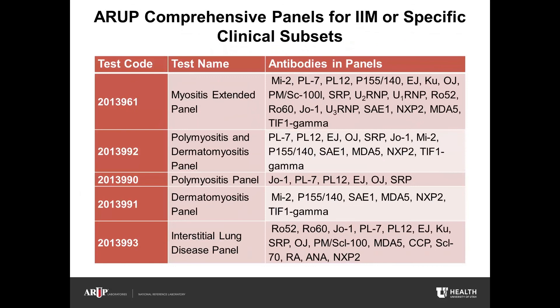Recognizing the need for physicians to adequately identify and stratify patients with myositis for treatment and long-term management, ARUP Laboratories offers several panels for evaluation. The myositis extended panel is comprised of myositis-associated and myositis-specific antibodies for a comprehensive evaluation. This panel is particularly useful in patients who may present with poorly defined clinical manifestations. For more targeted myositis subtype evaluation, three main panels are offered, including panels for polymyositis, dermatomyositis, as well as a combined one for polymyositis and dermatomyositis. Lastly, recognizing the frequency of interstitial lung disease in connective tissue diseases including myositis, a panel that includes a variety of autoantibodies is also offered for a more comprehensive evaluation.